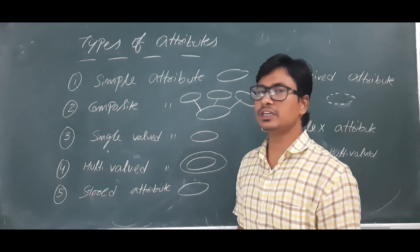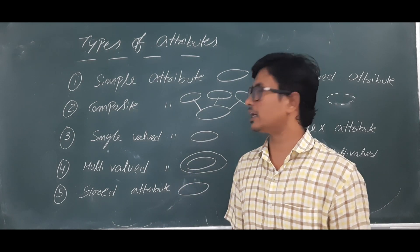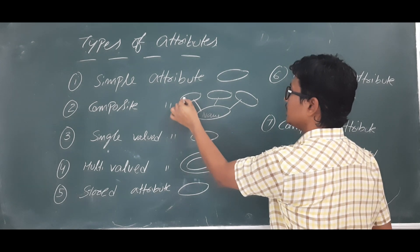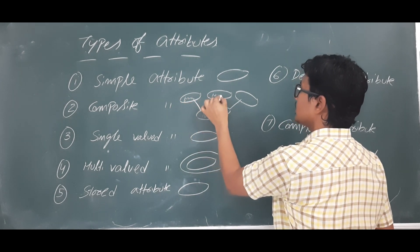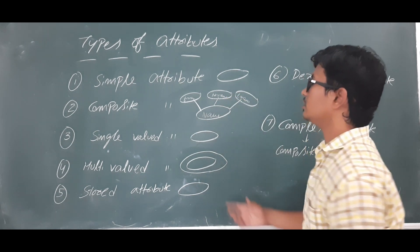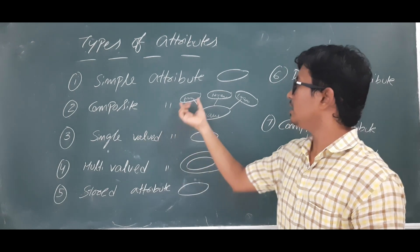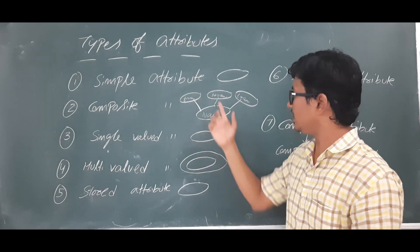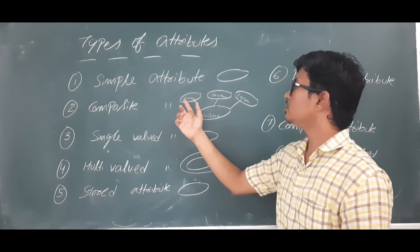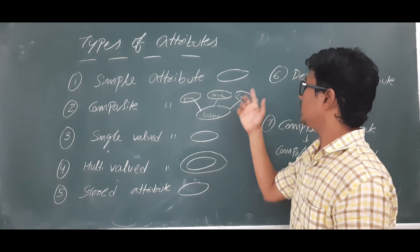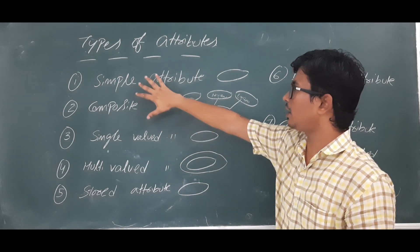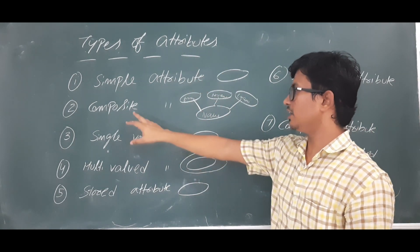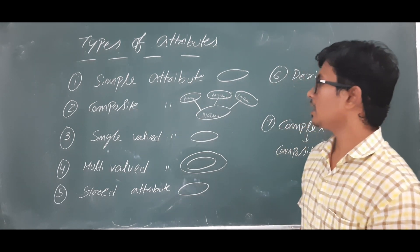Whereas a composite attribute can be further divided into various simple attributes. For example, your name can be further divided into first name, middle name, and last name. So I can call 'name' a composite attribute. The first name, middle name, and last name each cannot be further divided, so each of those is a simple attribute.